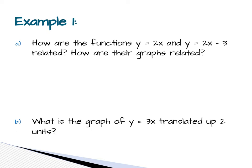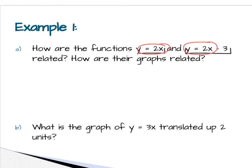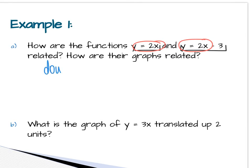Example 1, they ask you how the two functions are related. So if you'll look at the two functions, they're the same here. But the minus 3 translates this function down 3. So I'm just going to say down 3 units. How are their graphs related? Well, the second graph, each point is 3 lower than the first graph.